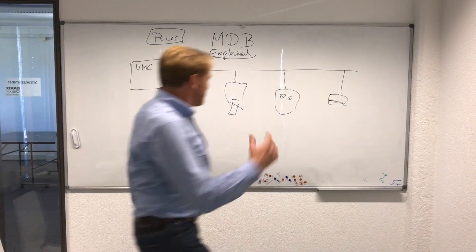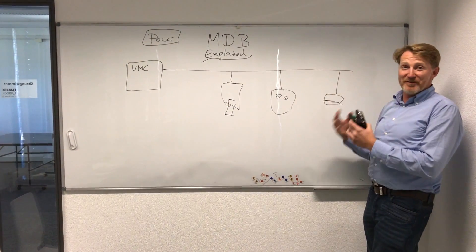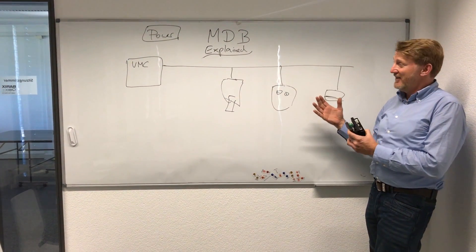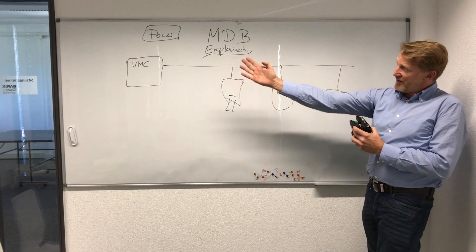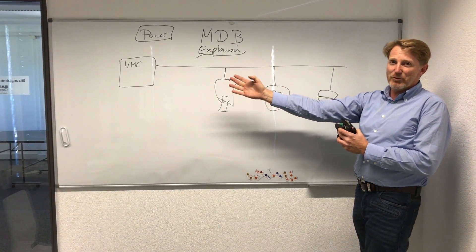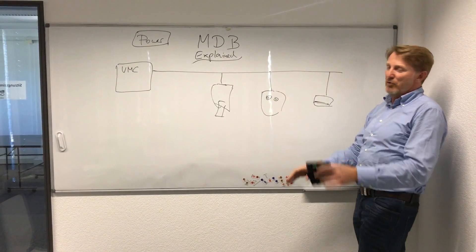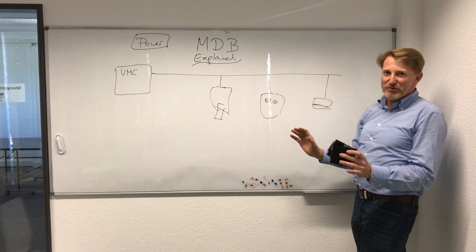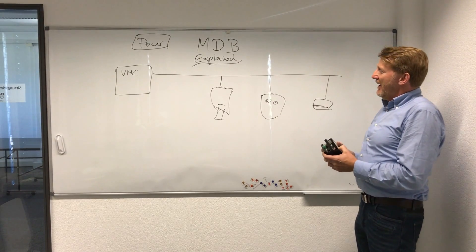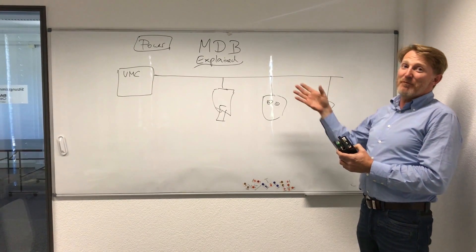Hi guys, I'm back. Last time I was taking the position of the master, and now I'm taking the position of the slave. We have our vending machine controller — the master — who drives this wonderful Mars, Coke, whatever vending machine, and we now want to give it money.